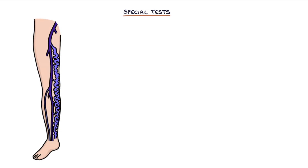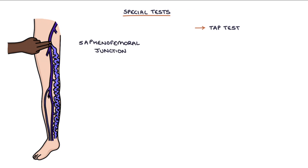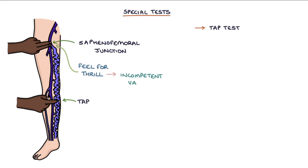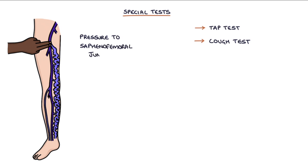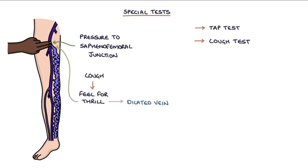The tap test involves applying pressure to the saphenofemoral junction (SFJ) and tapping the distal varicose vein, feeling for a thrill at the SFJ. A thrill suggests incompetent valves between the varicose vein and the saphenofemoral junction. The cough test involves applying pressure to the saphenofemoral junction and asking the patient to cough, feeling for a thrill at the saphenofemoral junction. A thrill suggests a dilated vein at the saphenofemoral junction, called a saphenous varix.